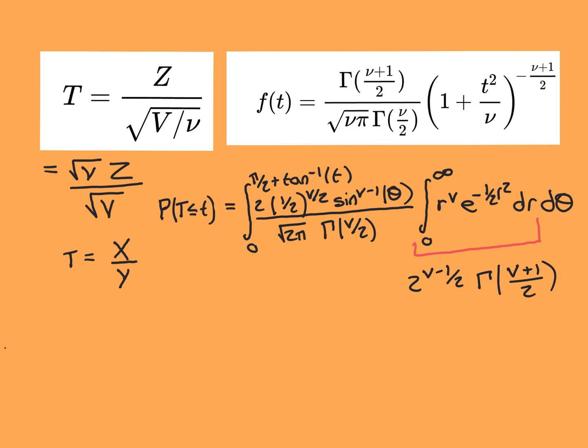Welcome back. The point we've got to so far is that we have found the CDF for our random variable t, where our random variable t is x over y, where x was standard normally distributed and y was the square root of a chi-square distribution with ν degrees of freedom. It is almost the t distribution, except that we haven't scaled by the square root of ν. We'll do that final little tweaking right at the end.